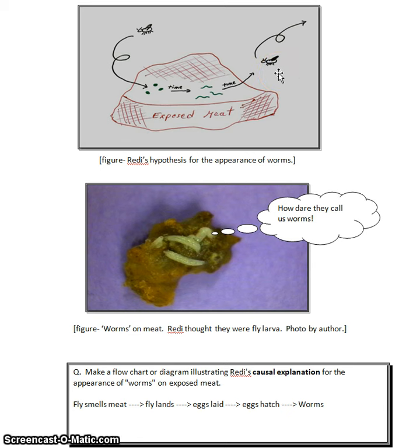If that's the case, then meat was not spontaneously generating into worms. Rather, the flies were attracted to the meat as a food source for the developing larvae.